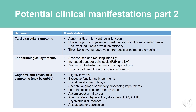Endocrinological symptoms include azoospermia — the absence of sperm in the ejaculate — and resulting infertility, increased gonadotropin levels (elevated FSH and LH), decreased testosterone levels or hypogonadism.